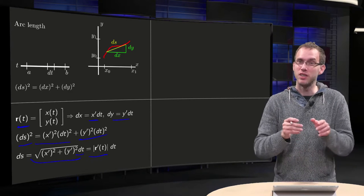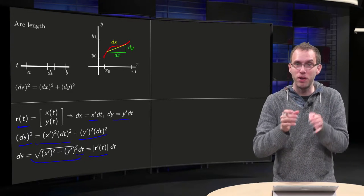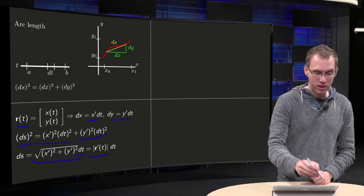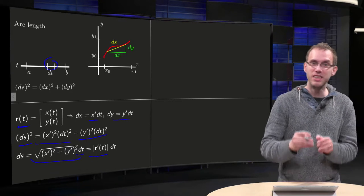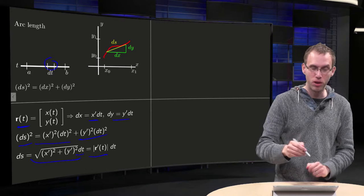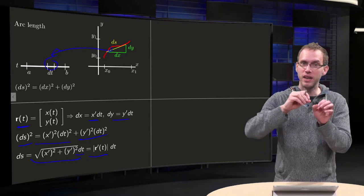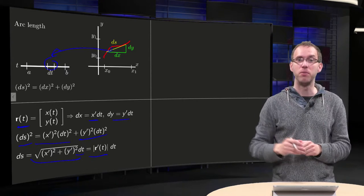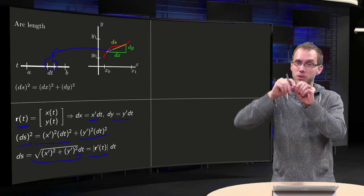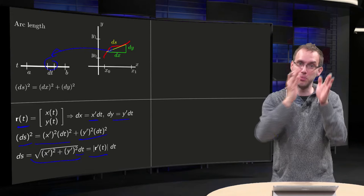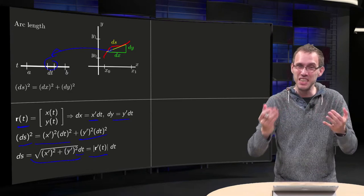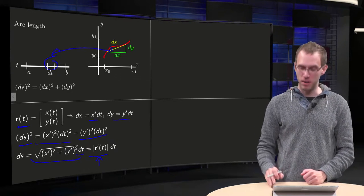So actually this length of r prime gives us the factor by which dt is increased if you go along the curve. So in between over here you have an increased factor of r prime of t. That is the increase to get your ds, length of ds, in terms of length of dt. You can see it is increased by a factor of length of r prime.